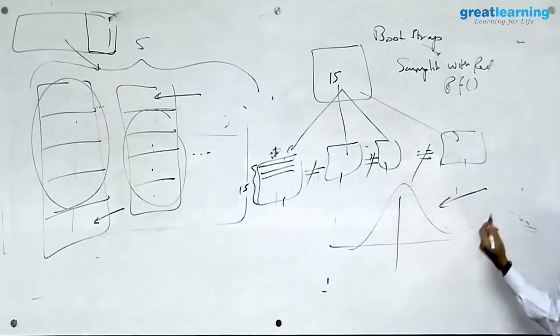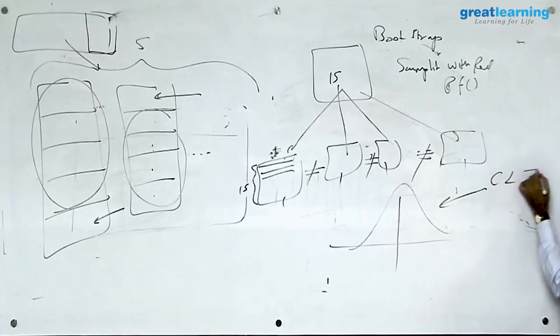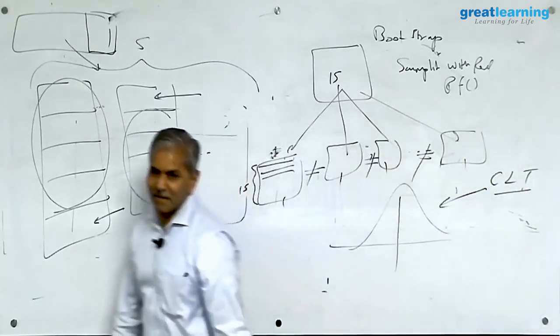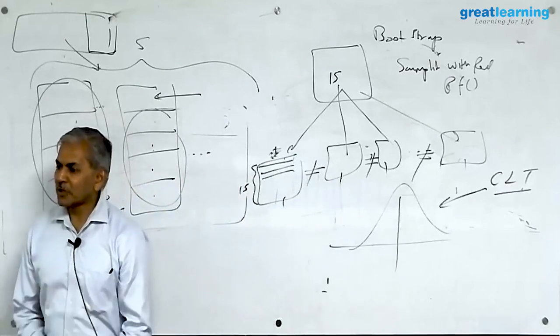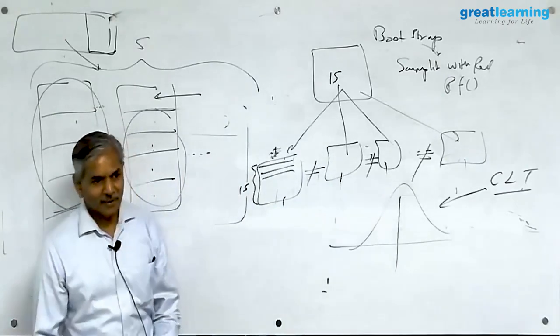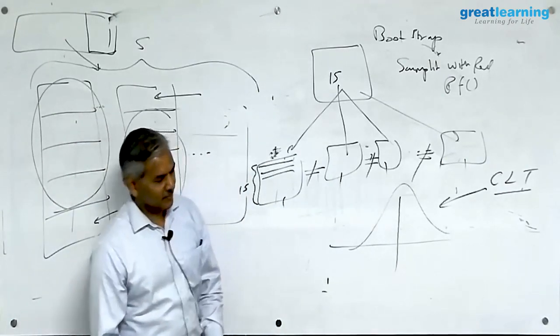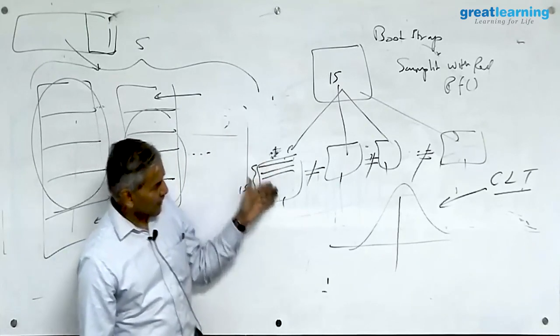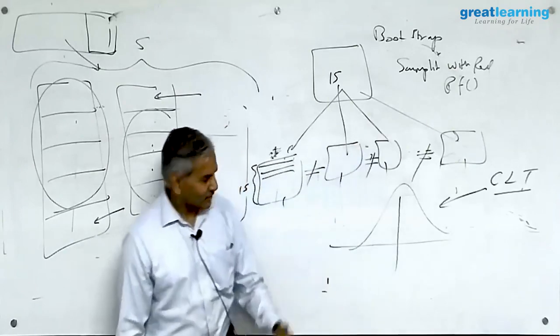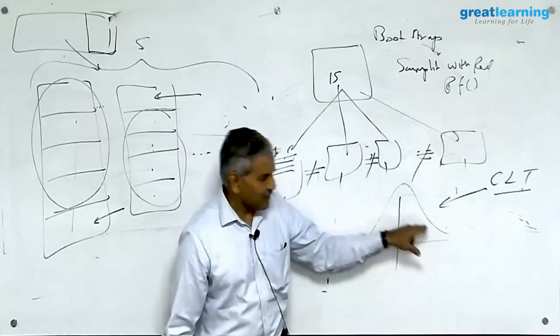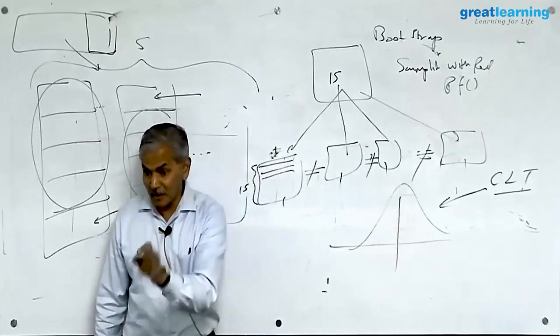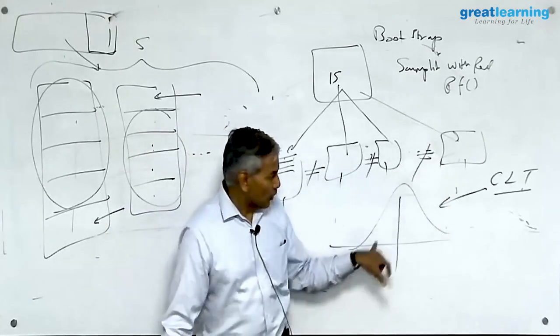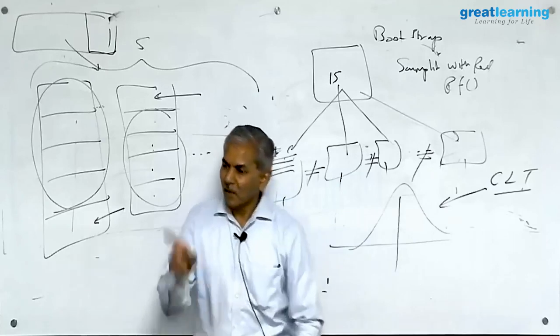This concept you would have heard in statistics is called central limit theorem. So when I do bootstrap sampling with my model, I take advantage of central limit theorem. And as a result of which, when I distribute, plot the distribution of the accuracies on each one of these, the plot tends to take a normal shape, theoretical normal. The larger the number of samples, more normal it will be.